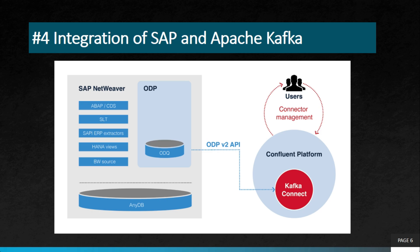There are many use cases where you need to stream data — meaning you keep sending data in bits and parts rather than in a batch format. Wherever the business scenario requires such an environment, you can always go for Apache Kafka and use the SAP system to create interfaces and databases.